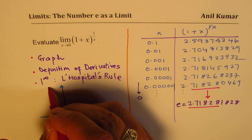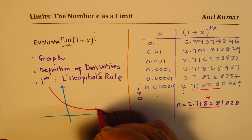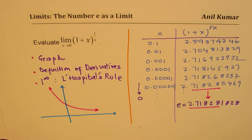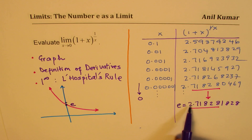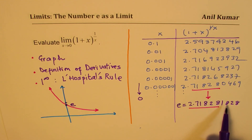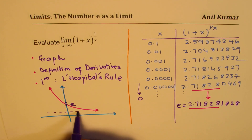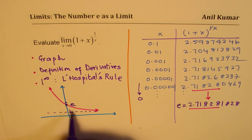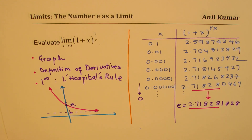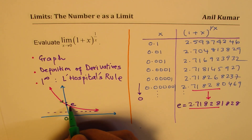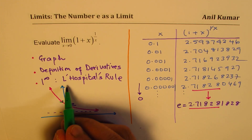If you use a graphing calculator and sketch this graph, the result will be that the point here is e, which is slightly less than 3 — exactly 2.718... You'll find that this function is horizontally asymptotic to 1. As we are approaching 0 from either side, the value which we are approaching is e.